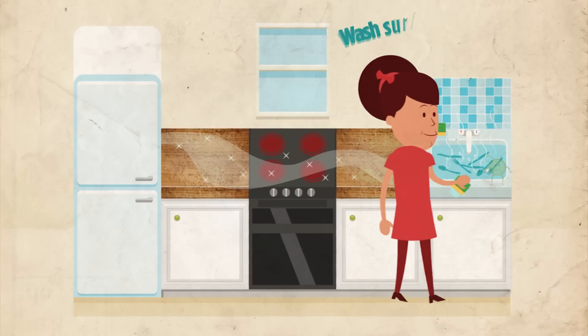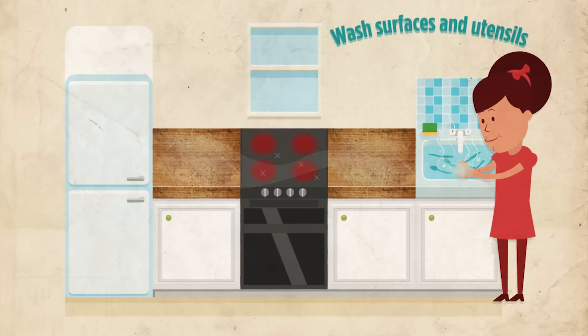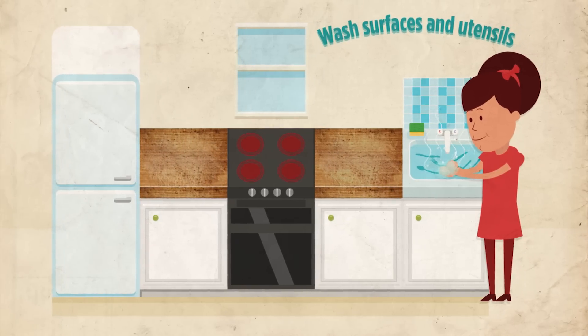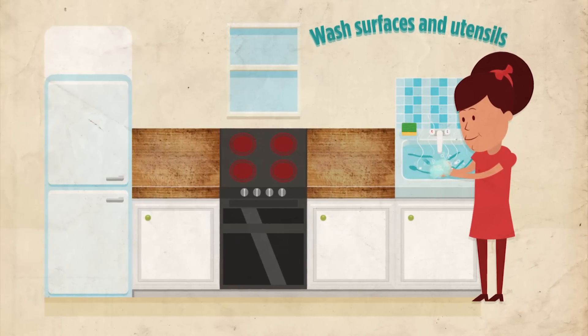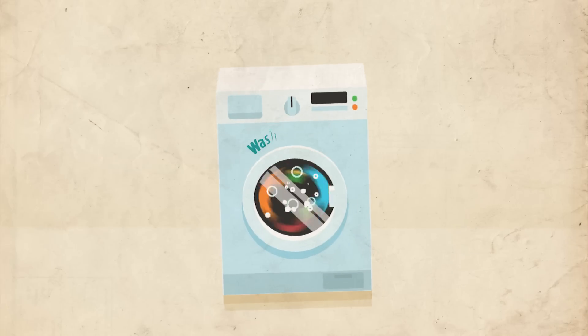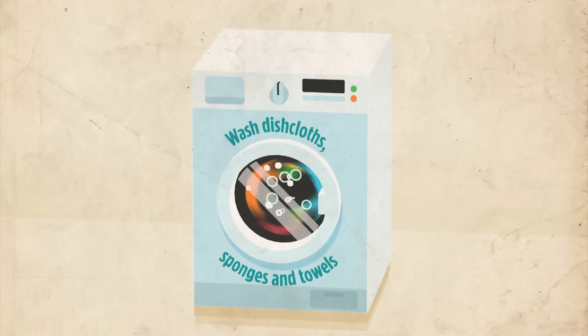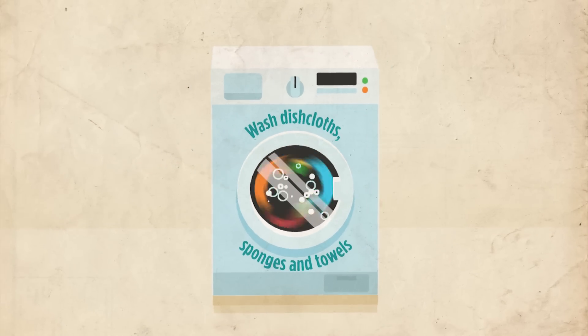After each use, wash surfaces and utensils including appliances, countertops, cutting boards, and silverware with hot soapy water. Wash dishcloths, sponges, and towels often in the hot cycle of your washing machine.